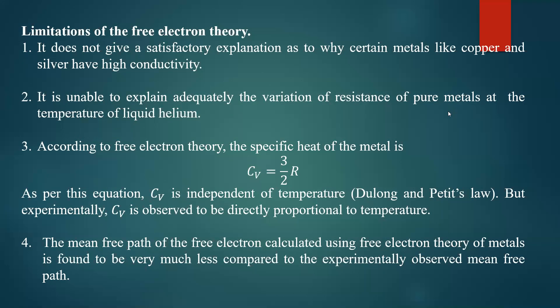The second failure: it cannot explain the variation of resistance of pure metals at the temperature of liquid helium. At very low temperatures, why the resistance of metals varies — this is essentially the phenomenon of superconductivity. Resistance decreases as temperature decreases and becomes zero at a particular temperature called the critical temperature. That particular phenomenon cannot be explained using classical theory.